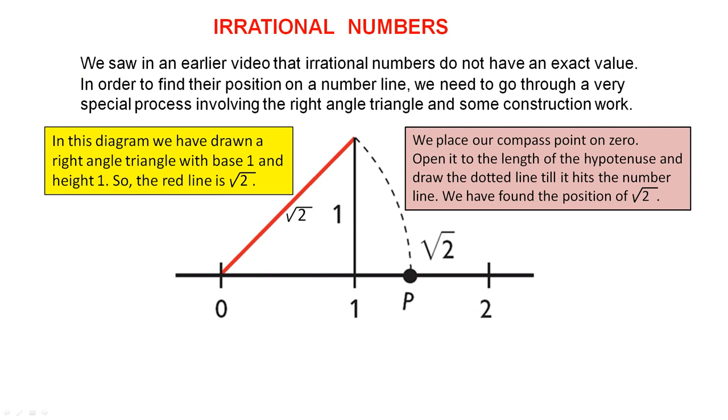Irrational numbers. We saw in an earlier video that irrational numbers do not have an exact value. That is, they don't have an exact rational value. In order to find their position on a number line, we need to go through a very special process involving the right angle triangle and some construction work.